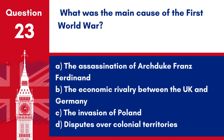Question 23. What was the main cause of the First World War? A. The assassination of Archduke Franz Ferdinand. B. The economic rivalry between the UK and Germany. C. The invasion of Poland. D. Disputes over colonial territories. Answer: A. The assassination of Archduke Franz Ferdinand was a primary trigger of the First World War.